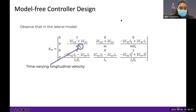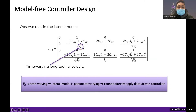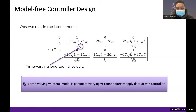An important point for the lateral model is the appearance of longitudinal velocity VX in the system matrix A_LA. Because of this, the lateral model becomes a parameter-varying model. Assuming VX is constant is not practical, since it is almost impossible for an AV to maintain constant velocity throughout, and maintaining constant velocity can lead to hazardous situations when surrounding vehicles accelerate or decelerate. Therefore, the previously discussed controller design cannot be directly applied.